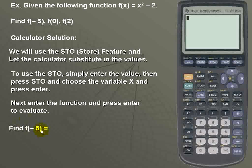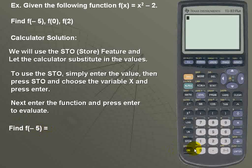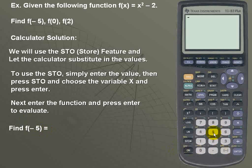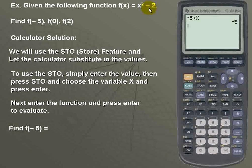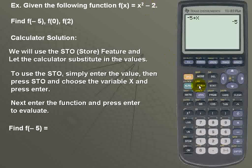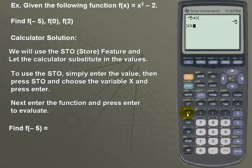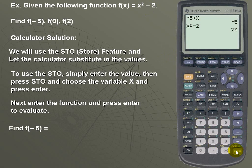To find f of negative 5, I'm going to take my value of negative 5, store that for x, and lock that in by hitting ENTER. Once we've stored our value for x, next we'll go back to our function, which is x squared minus 2, and enter that in. We hit ENTER for a result of 23.